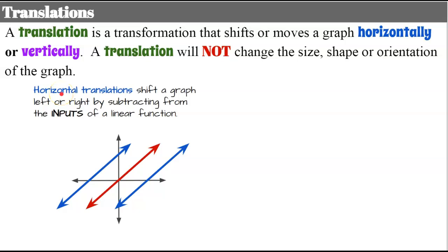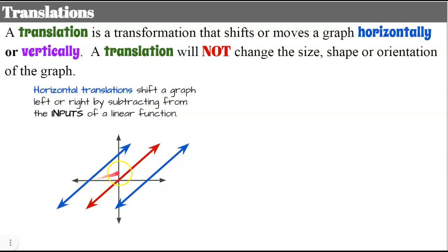Horizontal translations shift a graph left or right by subtracting from the inputs of a linear function. Since horizontal refers to our x-axis, that's our inputs, our domain — that's why it affects things that way. All points on the lines are shifted the same distance left or the same distance right, and the lines remain parallel.